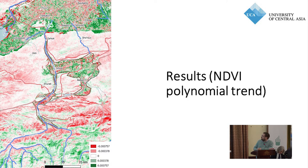These are the NDVI polynomial trend results. Green areas show where vegetation is increasing; red areas show where vegetation is decreasing — a negative trend. The agricultural areas are visible here, and this is Uzbekistan, also agricultural areas. You can zoom in closely to see which individual fields show positive or negative trends, allowing you to go to specific households or farmers and ask why their field shows a negative vegetation trend, or learn from those with strong positive trends.